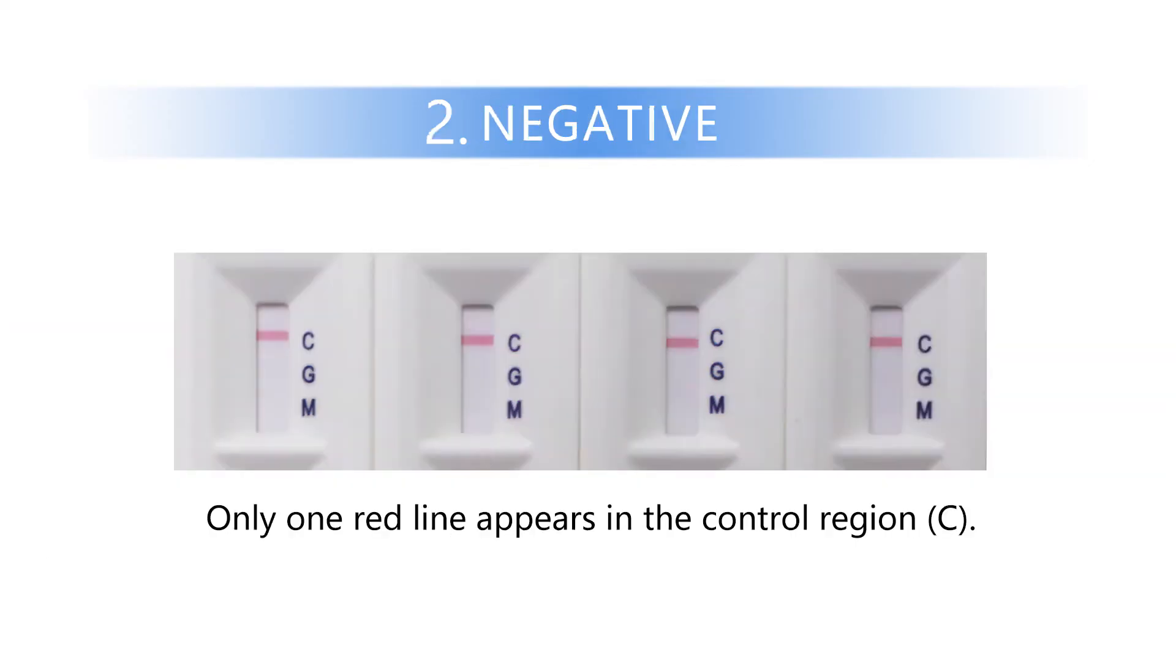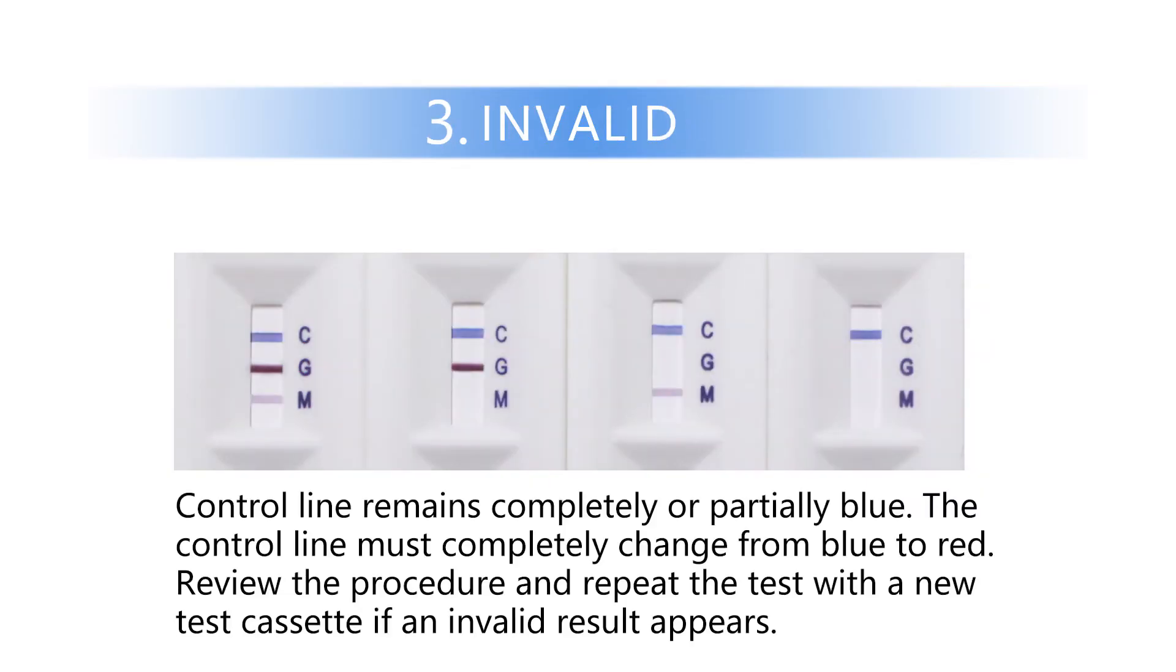Negative: only one red line appears in the control region. Invalid: the control line remains completely or partially blue. The control line must completely change from blue to red. Review the procedure and repeat the test with a new test cassette if an invalid result appears.